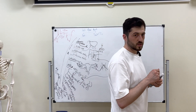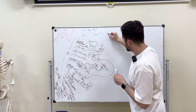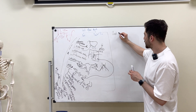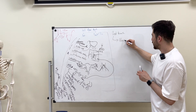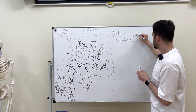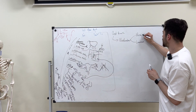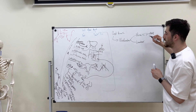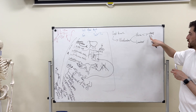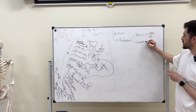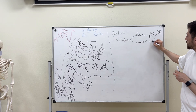Now the posterior trunk branches of the internal iliac artery. The first branch is the iliolumbar artery, which has two parts: the iliac branch — going to the iliac fossa — and the lumbar branch. The iliac branch forms anastomosis with the circumflex artery from the external iliac artery, and the lumbar branch forms anastomosis with the fourth lumbar branch of the aorta.